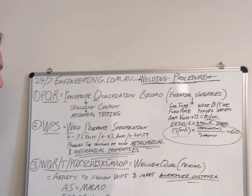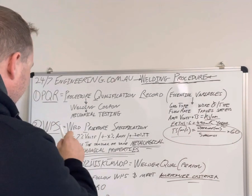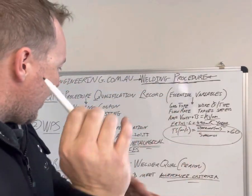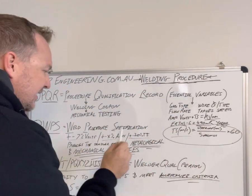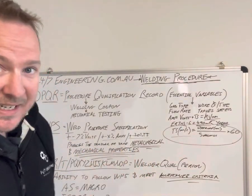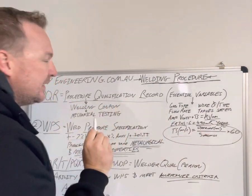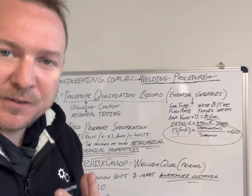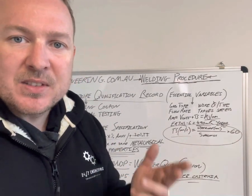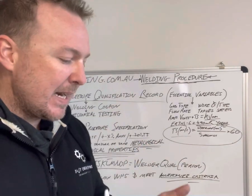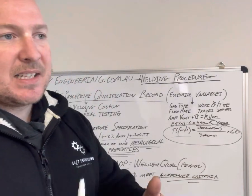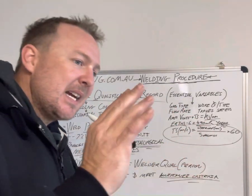You guys need to know this, otherwise you're not following the WPS — you're just winging it on the job. When you go plus or minus within the specified ranges, you end up with the same or similar metallurgical and mechanical properties as when they welded the original PQR. That's the goal, that's why they exist. You need to be within the range of your amps, volts, and travel speed, using the same or similar wire, the same gas, and in the same position.